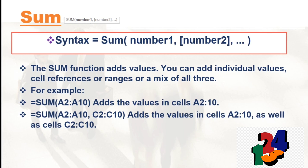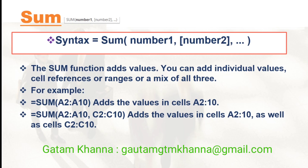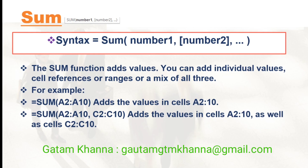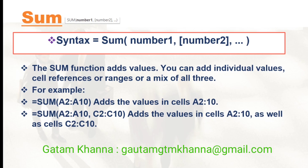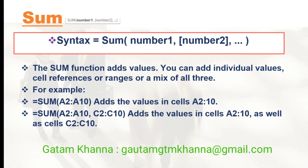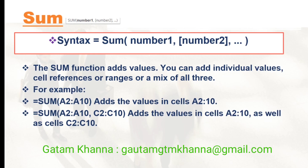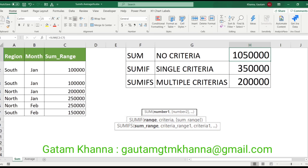For example, equals to SUM open parenthesis A2 to A10 then close parenthesis adds the values in cells A2 to A10. A second example: equals to SUM open parenthesis A2 to A10 comma C2 to C10 then close parenthesis adds the values in cells A2 to A10 as well as cells C2 to C10.